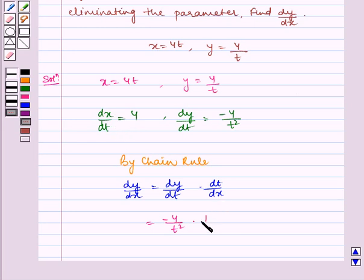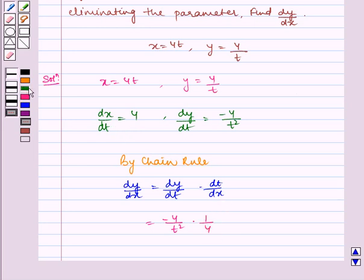So dt/dx equals 1 over 4. We see the 4 and 4 get cancelled.